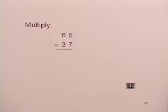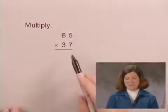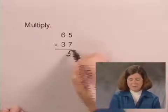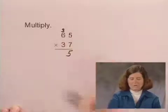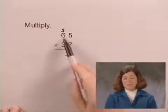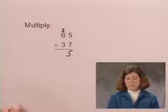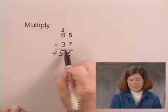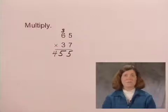In order to do this, we'll first multiply 65 by 7. 7 times 5 is 35. Write the 3 above the 6. 7 times 6 is 42, plus the 3 is 45. So we have that 7 times 65 is 455.